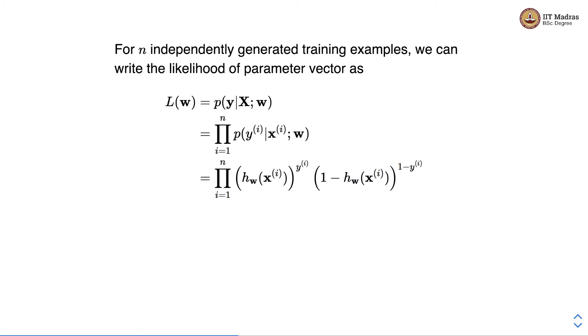Now we can write this quantity as h of xi raised to yi into 1 minus h of xi raised to 1 minus yi. So the likelihood can be expressed in this particular form.